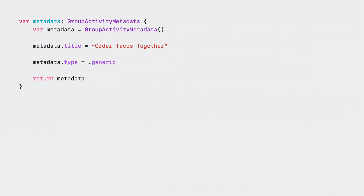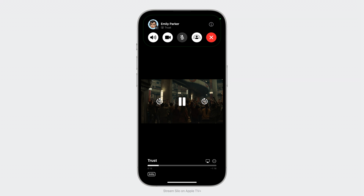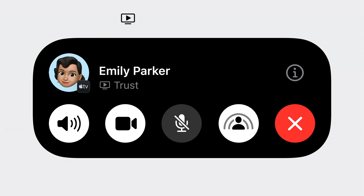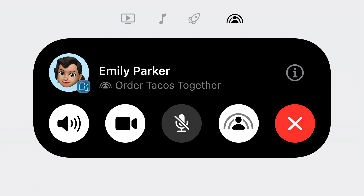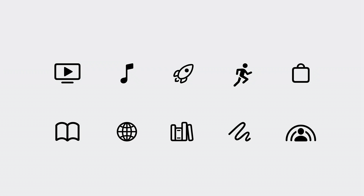When defining your group activity type, you provide metadata to inform the system on how to best represent your activity. Activity types include watching together, listening together, playing together through Game Center, or generic for any other form of SharePlay experience. In iOS 17, iPadOS 17, macOS Sonoma, and tvOS 17, we're adding additional types: work out, shop, read, learn, and create together. We're excited to see how this helps illustrate your exciting types of experiences, both now and to come.